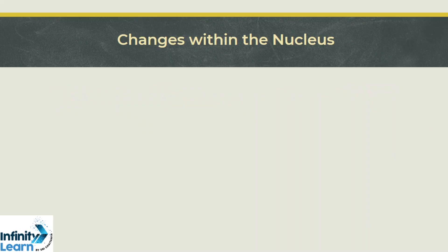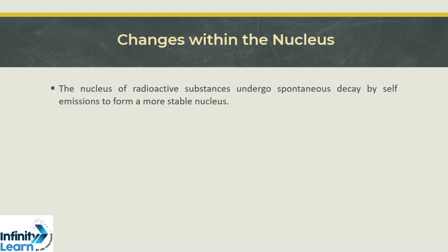Coming back to the topic, let us discuss the changes within the nucleus. The nucleus of radioactive substances undergoes spontaneous decay by self emission to form a more stable nucleus. This emission of alpha, beta and gamma radiation is done to form a stable nucleus.